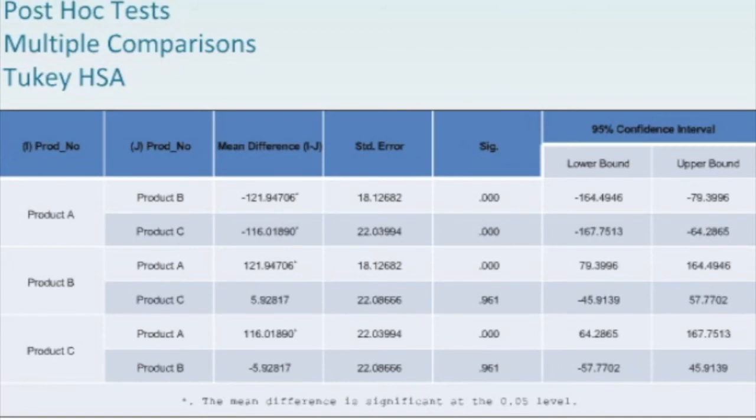In the next column, we look at product B, and the Tukey is comparing product B against product A. And so it's pretty much the same as what we've got in the row above where product A is going against product B. It's just a little different mathematically in terms of the signage. But we can see that we've got the same values, it's just that the direction of the difference is just opposite. But it's still a statistically significant result.